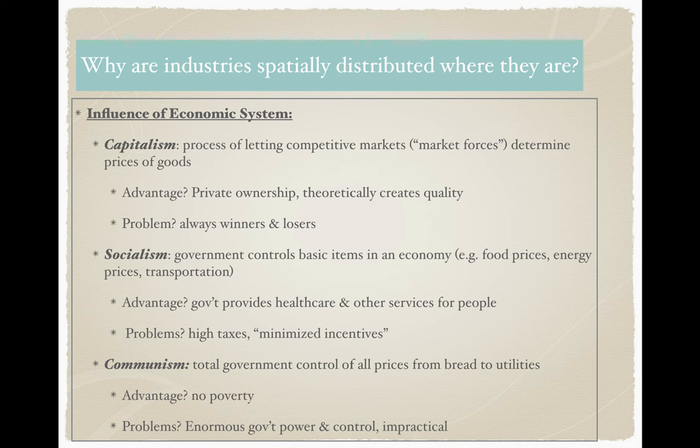There's another economic system — socialism. In socialism, the government controls some basic items in the economy: it may control food prices, energy prices, transportation prices. The idea is that if the government is able to levy high taxes on people, the government can provide health care and services. It's controlling the economy, making sure that certain services are provided for people. However, the problem is very high taxes — health care is provided to people, but it's paid for by taxes. Some people criticize this system as de-incentivizing hard work, that people won't necessarily work as hard if they're provided with services — a common criticism of a socialist state that a firm would consider when looking to start an industry in a socialist place.